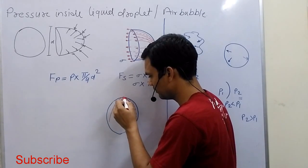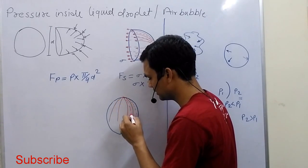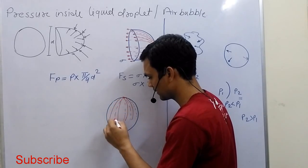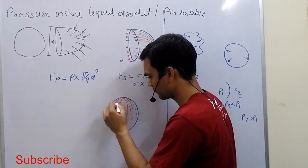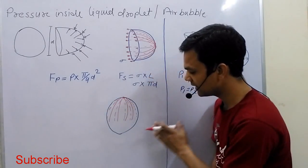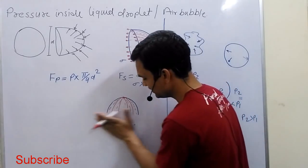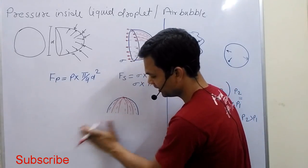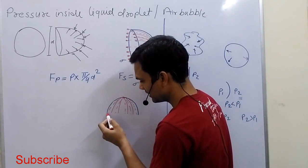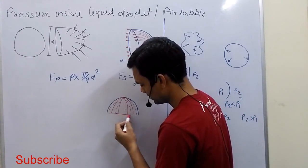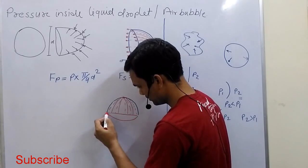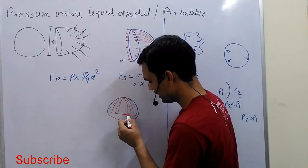So I will draw it like this. Now if I cut this football into two halves, the cross-section looks like this.